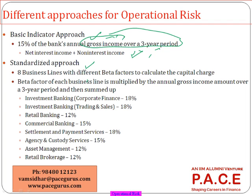The next approach is a slight improvement over the Basic Indicator Approach — the Standardized Approach. Instead of directly applying 15% to all departments, the whole banking functions are broken down into 8 major lines of business. Different weightages are given to different lines of business based on the risk they typically assume. Lines like retail banking, asset management, and retail broking, where operational risk volumes are not as heavy, are assigned a weightage of 12%.